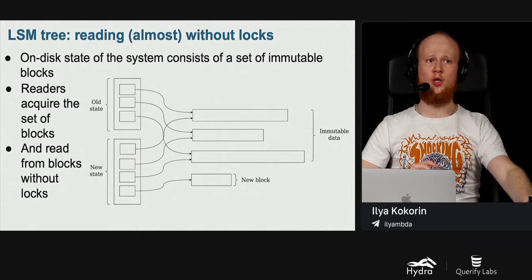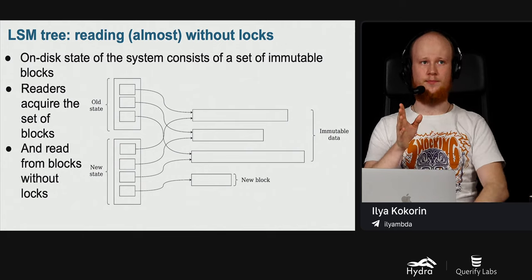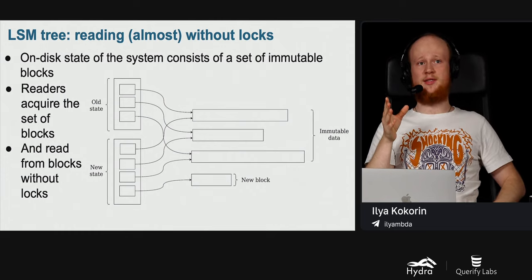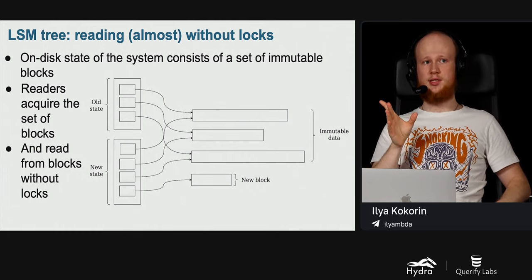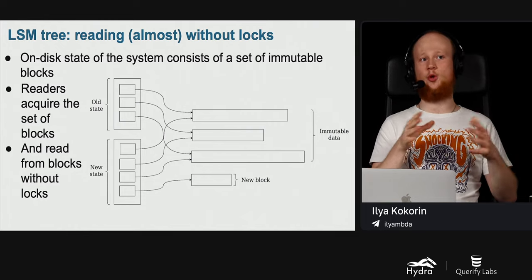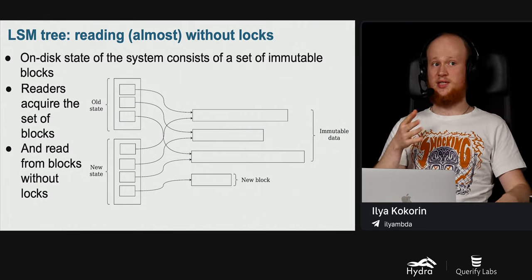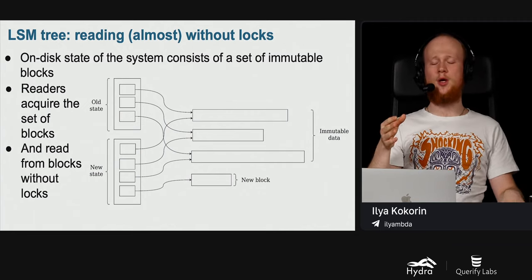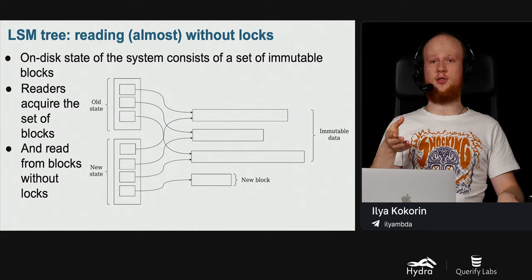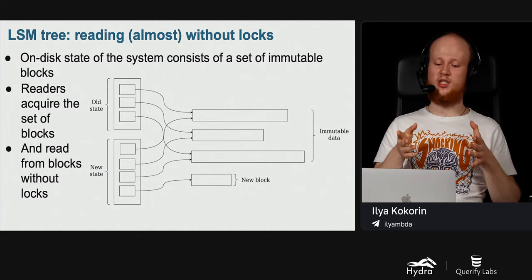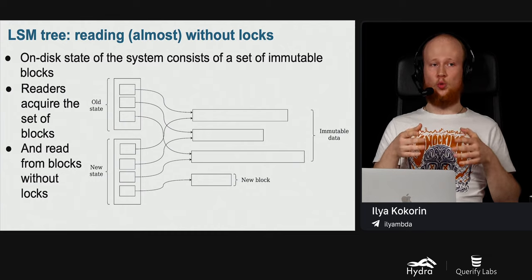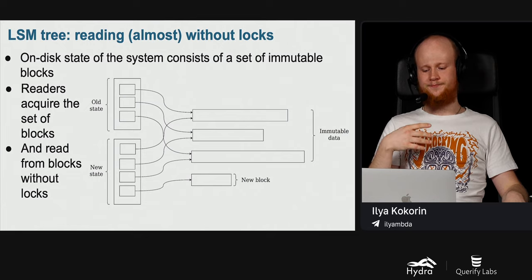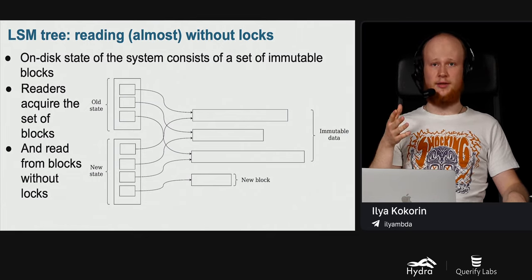To support reading without locks: the on-disk state consists of immutable blocks. Readers acquire a reference to the current set of on-disk blocks and read from them without locks, because the blocks are immutable. Readers may need locks to work with the RAM map, but all work with the disk happens completely without locks. LSM tree is a concurrency-friendly data structure and is adopted by many modern databases and storage engines like RocksDB and LevelDB.